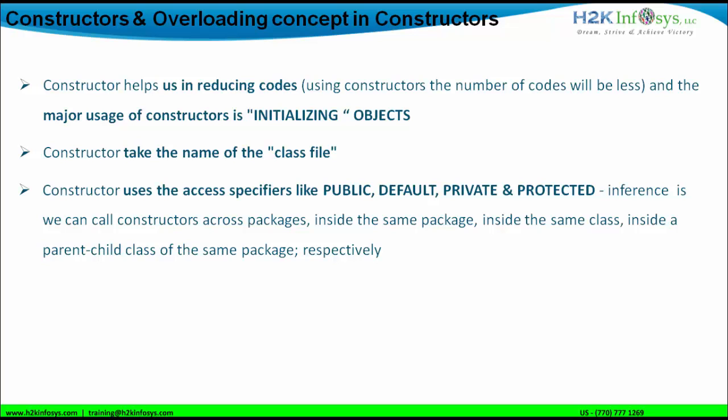We can have a default constructor, which will not have any keyword. A public constructor will have the keyword 'public'. Private constructors are also possible and will have the keyword 'private'. A protected constructor will have the keyword 'protected'. These access specifiers are not only used in constructors — they can be used in global variables and in methods as well.